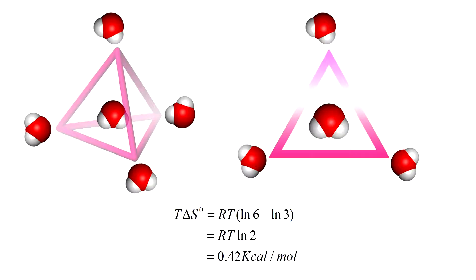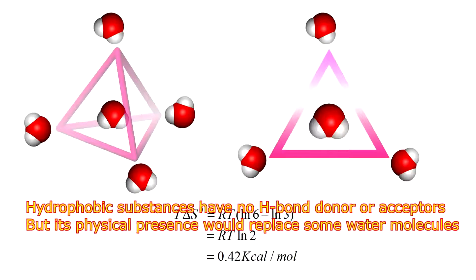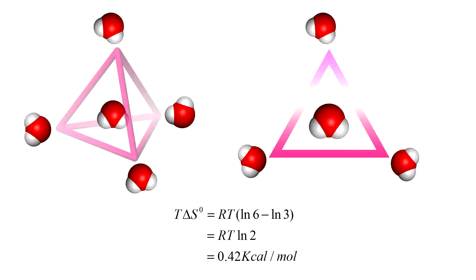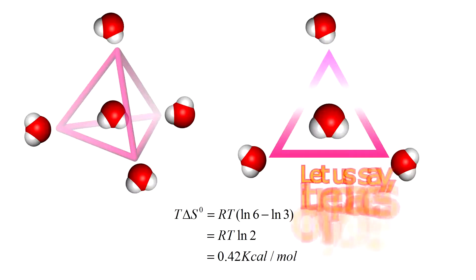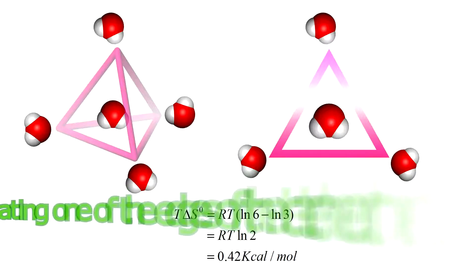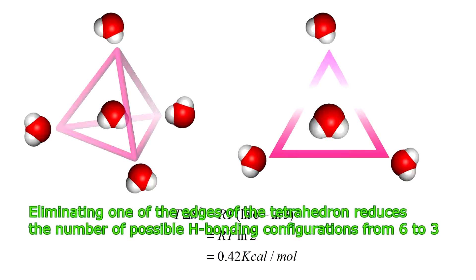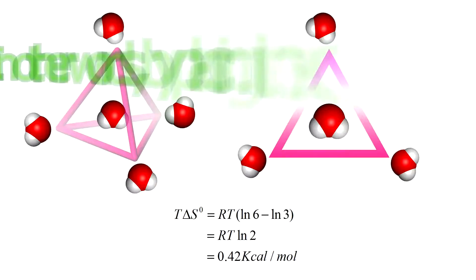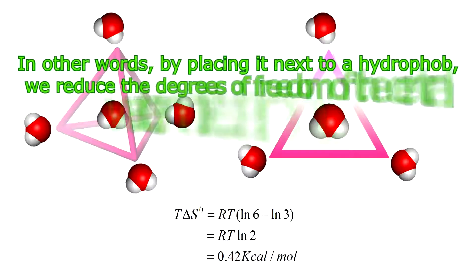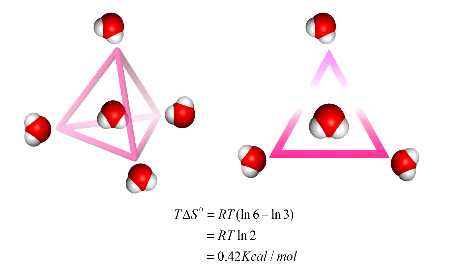What happens if we add some hydrophobic substances to water? Hydrophobic substances have no hydrogen bond donors or acceptors. If it replaces only one water molecule from only one corner of the tetrahedron, elevating one of the edges reduces the number of possible hydrogen bonding configurations from six to three. By placing a water molecule next to a hydrophobe, we reduce its degrees of freedom from six to three. The entropy loss in this process is 0.42 kcal per mole.